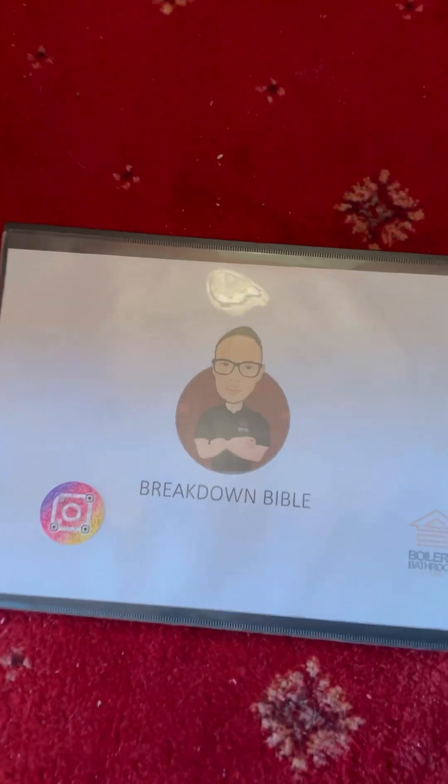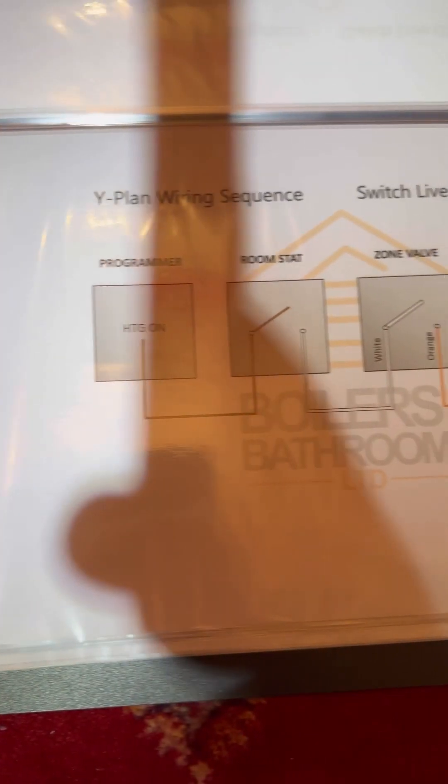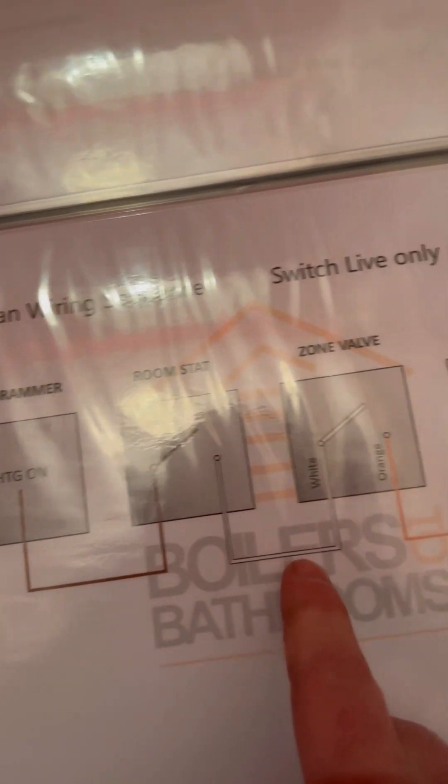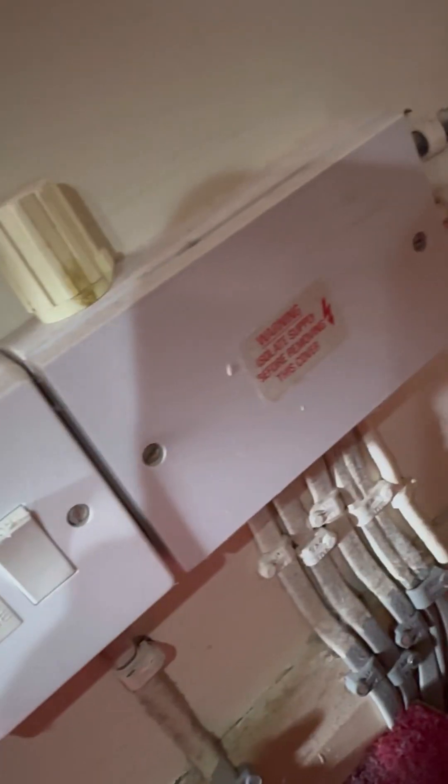Whip out the breakdown bible, but this time we're going to do it a little bit differently rather than follow the flow chart. There's the wiring diagram for heating on. We know that it goes from the programmer to the room stat which downstairs is right next to each other, and then up to the zone valve on white.